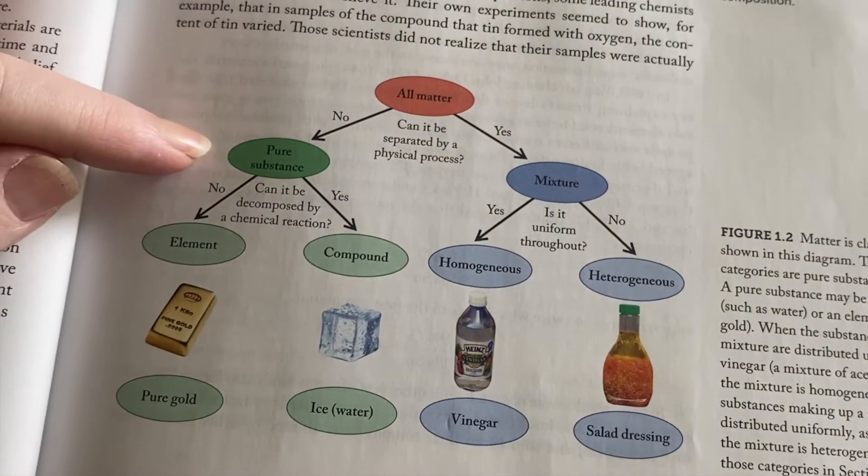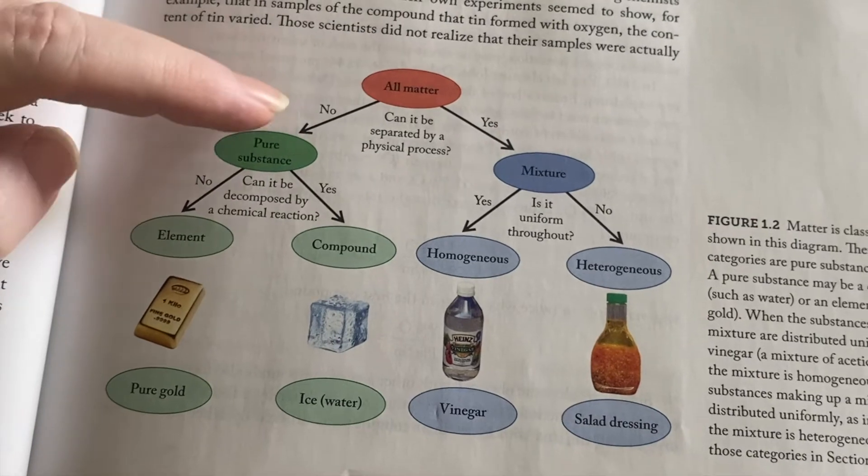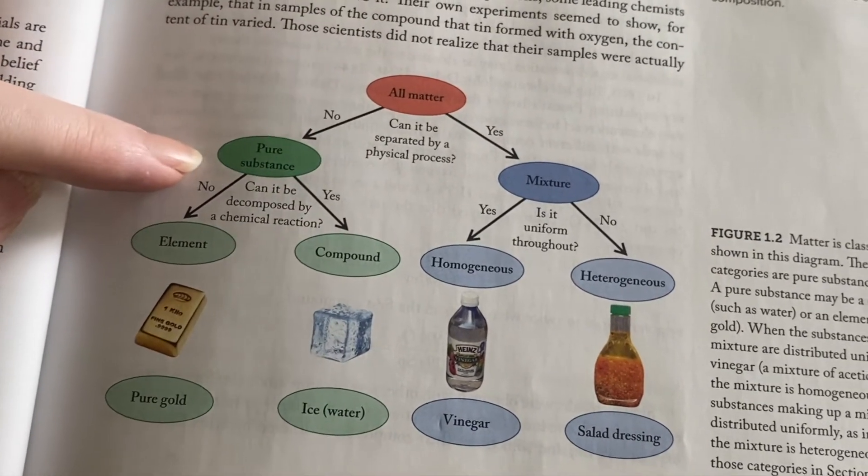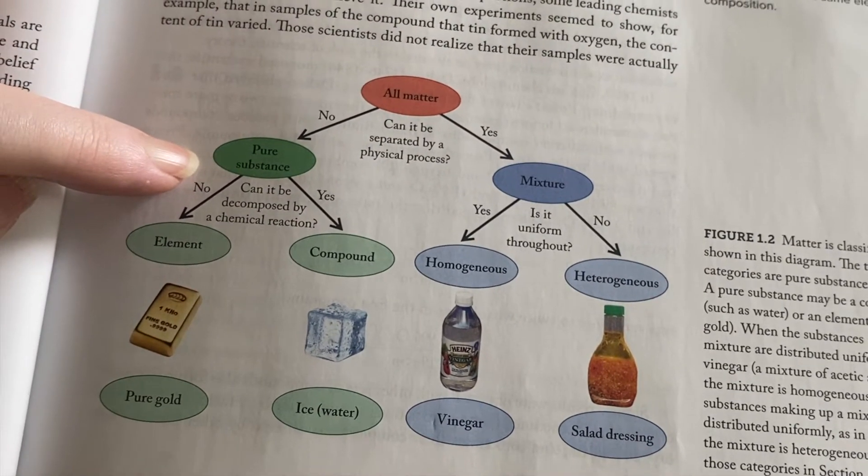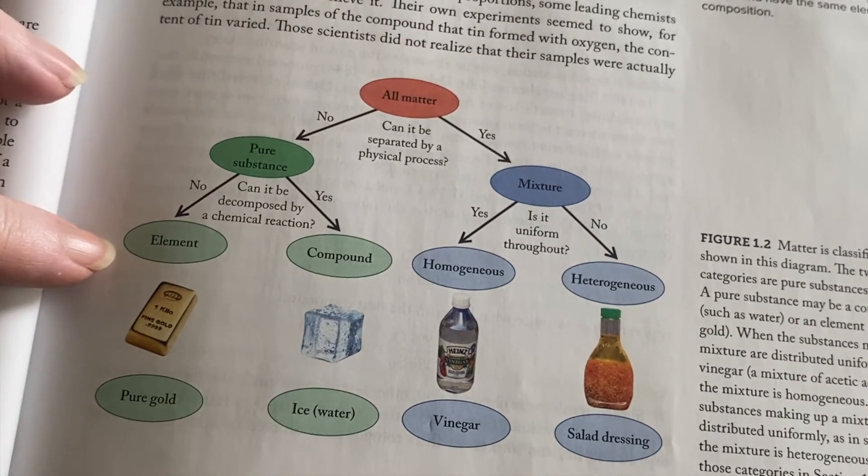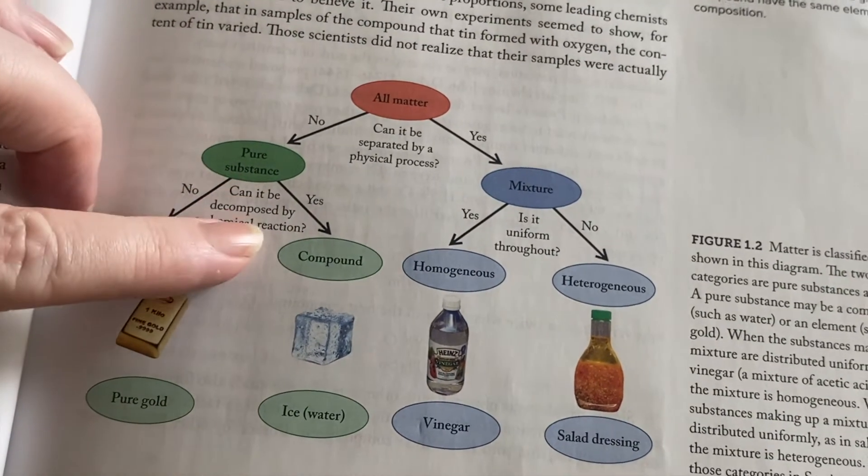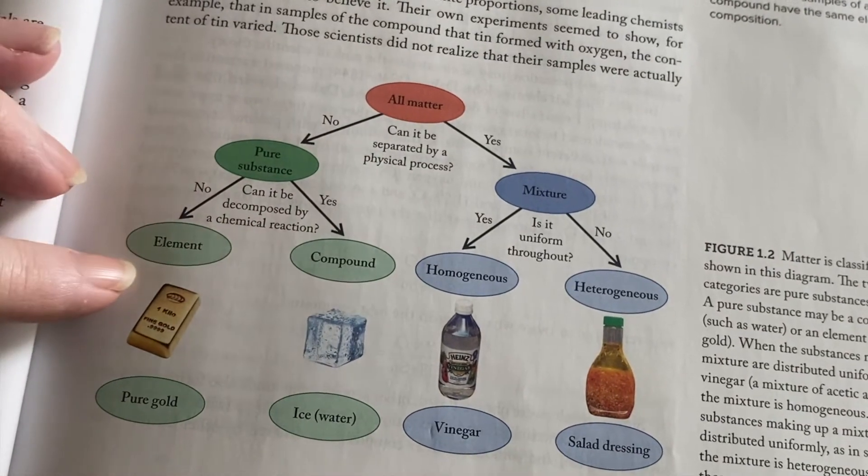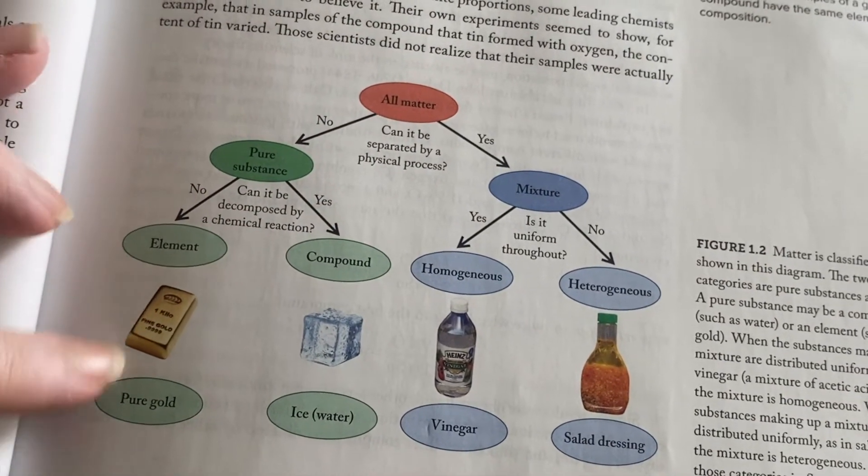On the other hand, you could come over here and say, well, I can't separate it with a physical process. So I think it's a pure substance. Now, as a pure substance, it could either be a pure element, which means you can't decompose it with a chemical reaction because it's already pure, like the gold.